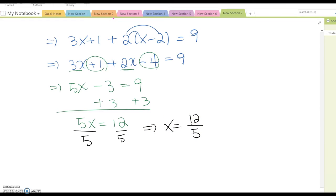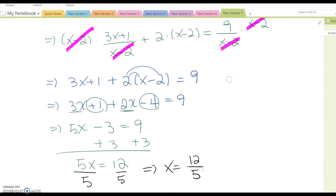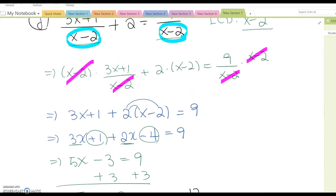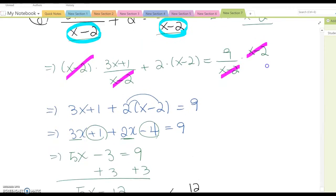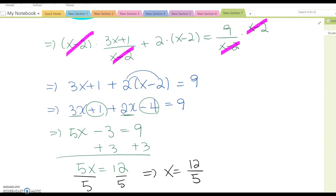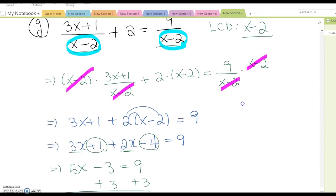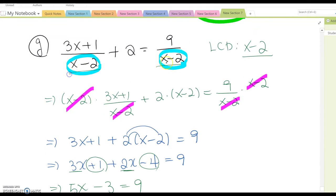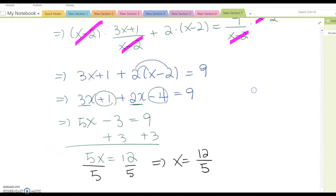Before confirming this is the answer, we have to go back to the original equation and make sure x equal to 12 over 5 doesn't make any fraction equal to undefined. Fortunately, it does not. Therefore, now you can confirm this is the correct answer.